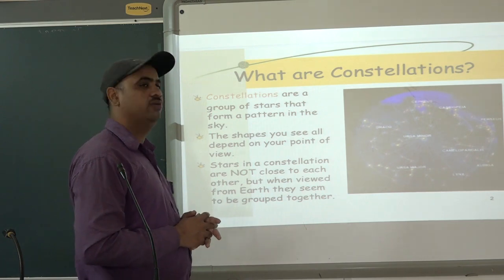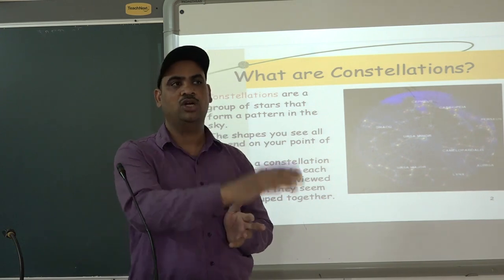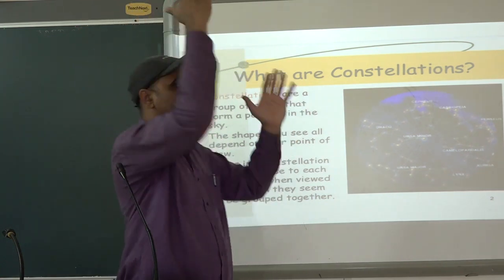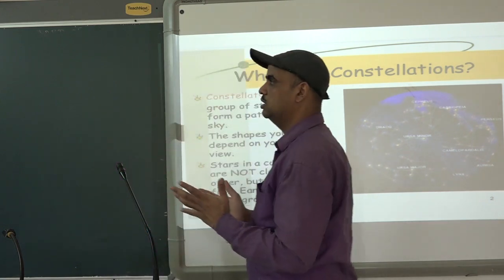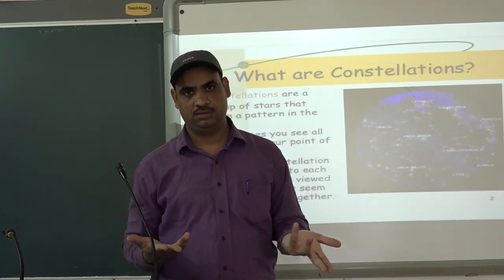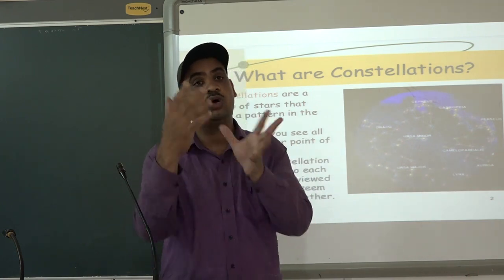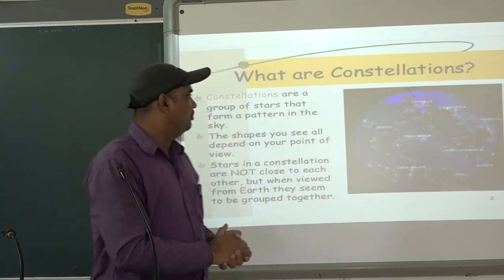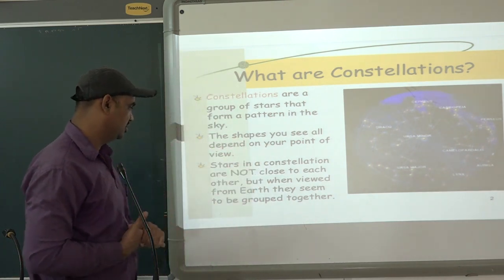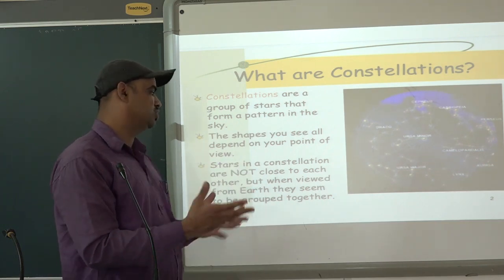The shapes you see all depend on the point of view. The shapes that you can see in the sky of stars depend on what direction you are looking at them. If you are looking from the eastern side, you may see a different shape. If you turn towards the north and look at the same stars, there are chances that you may see a different shape. It depends on which side you are looking at them from. The patterns created by stars are called constellations.